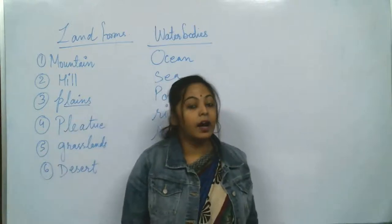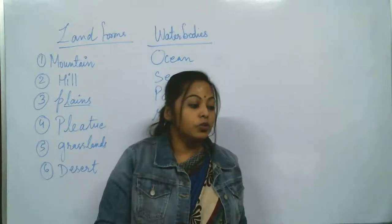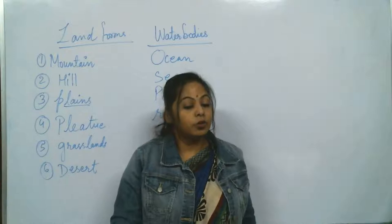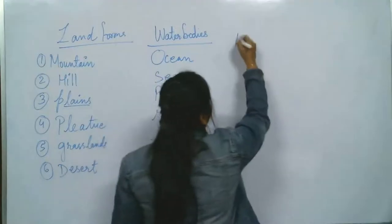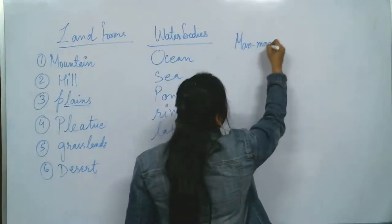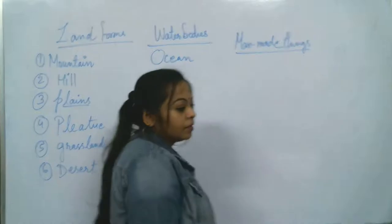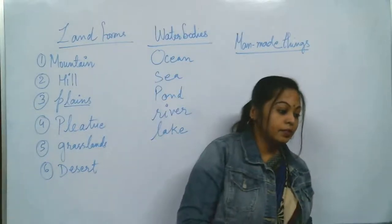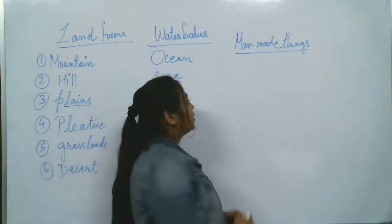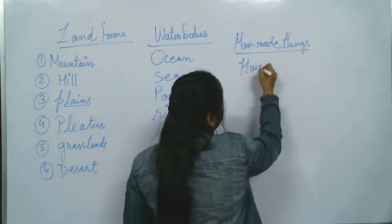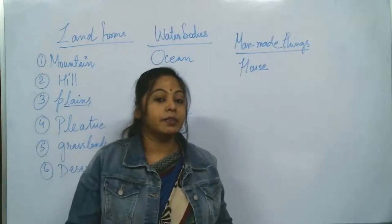What happens with man-made things? A house is man-made. Even a tree is not man-made - nature gives us trees. Whatever things we make ourselves, we call man-made. Man-made things are not natural. Tell me things which are man-made. I will give you an example - a house. Houses are man-made things which you don't naturally get.